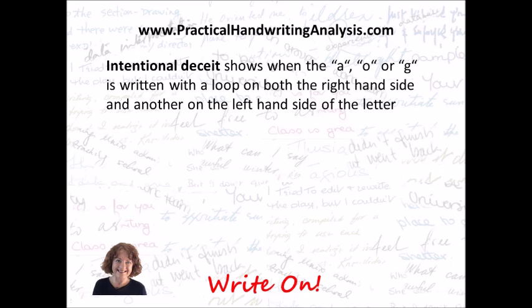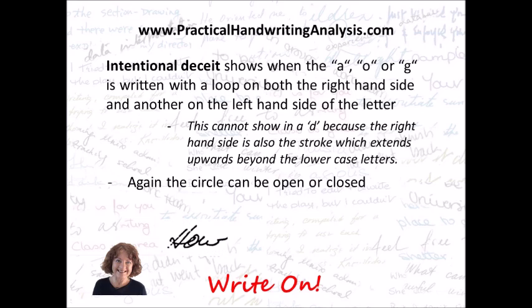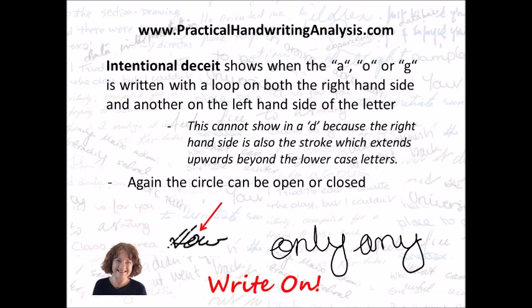Intentional deceit shows when the A, O, or G is written with a loop on both the right-hand side and another on the left-hand side of the circle letter. This cannot show in a D because the right-hand side is also a stroke which extends upwards beyond the lowercase letters. The circle can be open or closed. The word 'how' shows a loop on both the left and right-hand side. And in 'any,' the O and the A both have loops on both sides, showing intentional deceit.